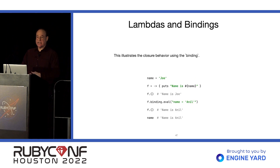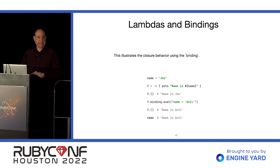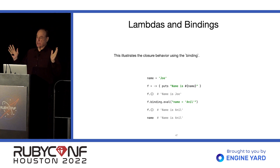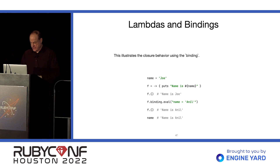You can call binding on a lambda and you'll get the binding that contains those local variable definitions and some other information. I don't know if that would ever be useful, but it's there if you want it.